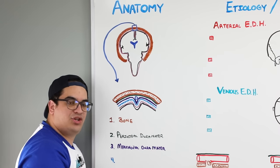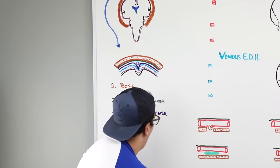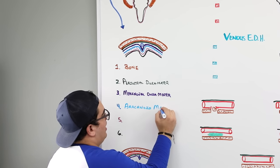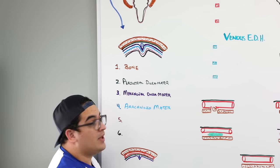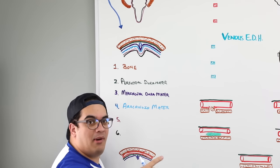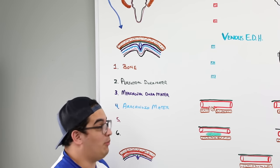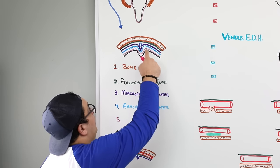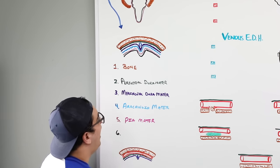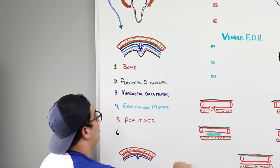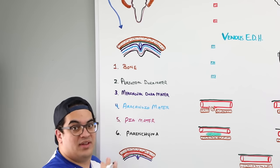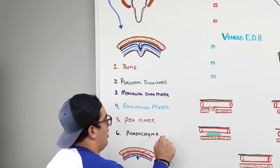For thoroughness, let's go through the other layers. The beautiful baby blue layer is called the arachnoid mater — named because it looks like a spider due to the trabecular extensions. There is a space between the meningeal layer of the dura mater and the arachnoid mater called the subdural space, where subdural hematomas occur. The next pink layer deep to the arachnoid is the pia mater, which clings tightly to the brain tissue — the parenchyma of the central nervous system.